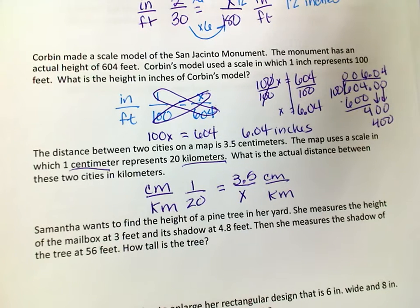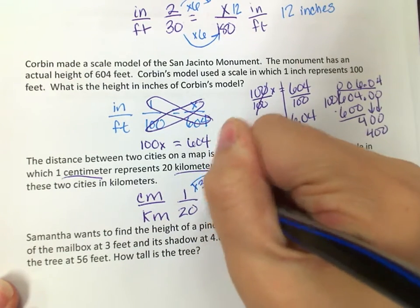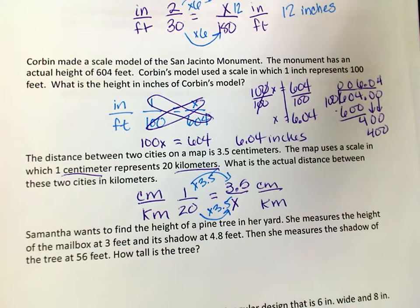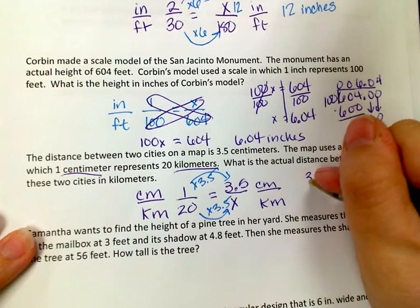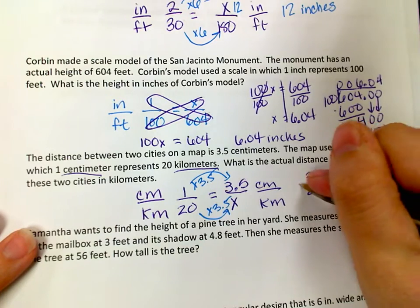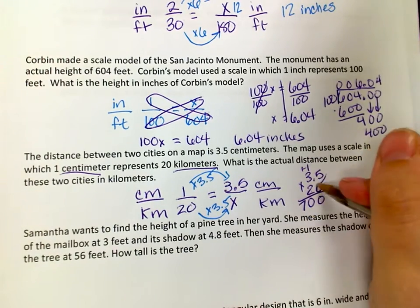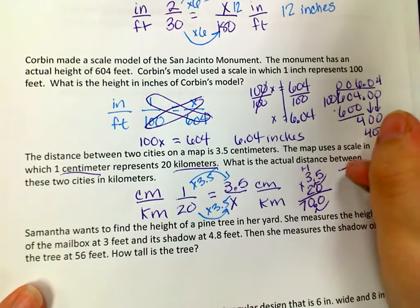I could do cross products, but it's easier to look at the relationship: from 1 to 3.5, I'm multiplying by 3.5, so I multiply 20 by 3.5 as well. Doing 3.5 times 20: 2 times 5 is 10, carry the 1, 2 times 3 is 6 plus 1 is 7, giving 70. There's one decimal place, but the result is a whole number, so my answer is 70 kilometers.